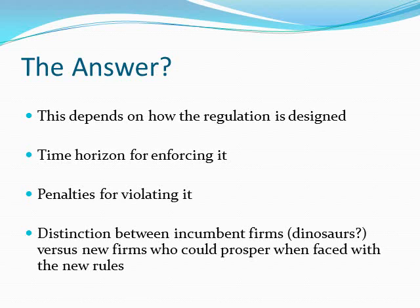But there are always new firms being born. Facebook is a new company, Google's a relatively new company. It can be the case that regulation can be a catalyst for new firms emerging who are more nimble and who could prosper in the face of regulation. So when thinking about the costs of environmental regulation, we need to make a distinction between incumbent firms who might face higher costs versus new firms who could face lower costs. That's an optimistic, evolutionary point about distinguishing incumbents from entrants.